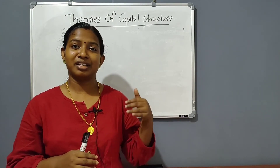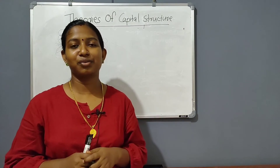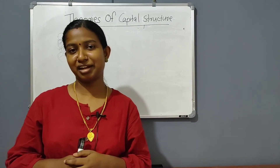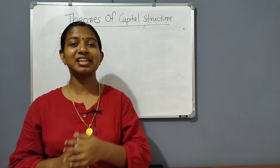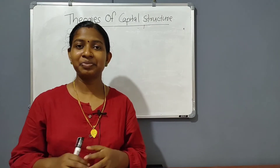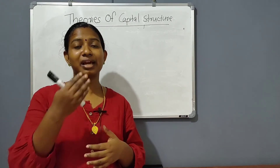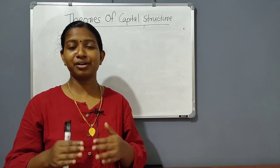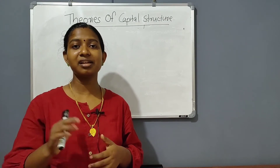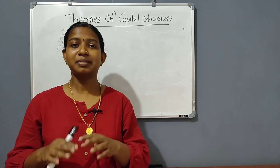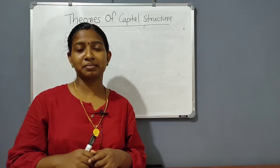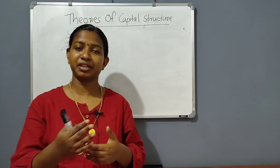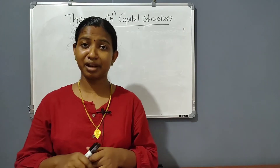The next theory is that the Net Income approach follows the Relevance Theory. The relevance theory involves the cost of debt. The cost of debt can be used in the capital structure. The leverage can be used to affect the cost of capital. When the cost of capital changes, the firm's value will increase. If you look at the cost of debt, it affects the capital structure and the financial risk.